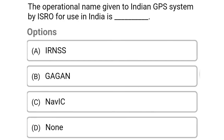So next question: the operational name given to the Indian GPS system by ISRO for use in India is — Option A: IRNSS. Option B: GAGAN. Option C: NAVIC. Option D: none of the above. So the correct answer is Option C, NAVIC.